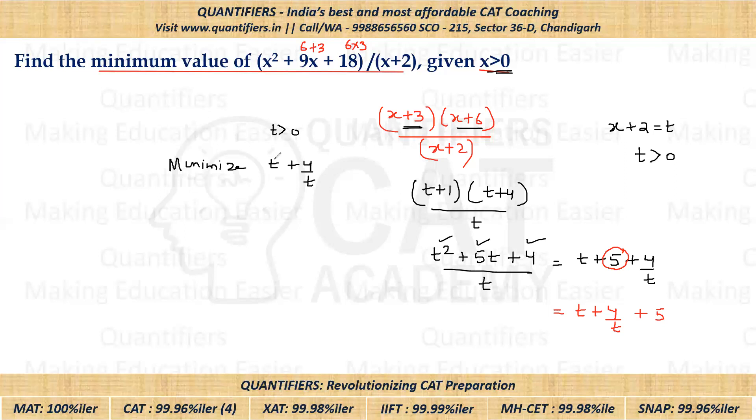So here I have two terms now: T and 4/T. And now if I apply this concept that arithmetic mean is always greater than equal to geometric mean—arithmetic mean would be (T + 4/T)/2. And this is greater than equal to, I hope you know how to calculate geometric mean. So there are two terms. We'll take their product and then square root. So in square root, we'll take the product of the two terms, that is T into 4/T.